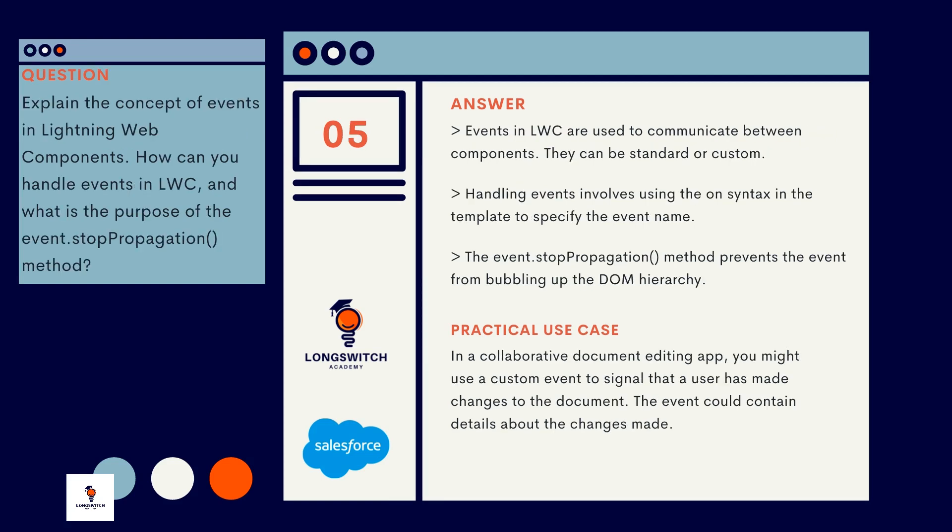Events play a crucial role in Lightning Web Components. Question number five: Explain the concept of events in Lightning Web Components. How can you handle events in LWC, and what is the purpose of the event.stopPropagation() method? Events in LWC are used to communicate between components. They can be standard or custom. Handling events involves using the 'on' syntax in the template to specify the event name. The event.stopPropagation() method prevents the event from bubbling up the DOM hierarchy. A practical use case: in a collaborative document editing app, you might use a custom event to signal that a user has made changes to the document, with the event containing details about those changes.